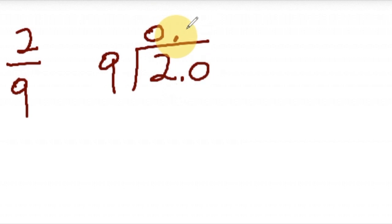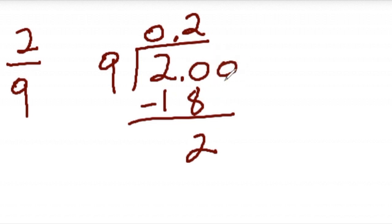Nine goes into 20, well, nine times two is 18. So I'll put a two here. Two times nine is 18. Subtract, and we have two left over. And remember, because it's a decimal, you can just keep adding zeros as much as you need to. So we bring that zero down.